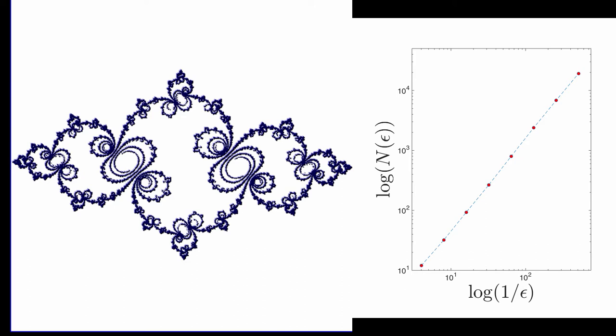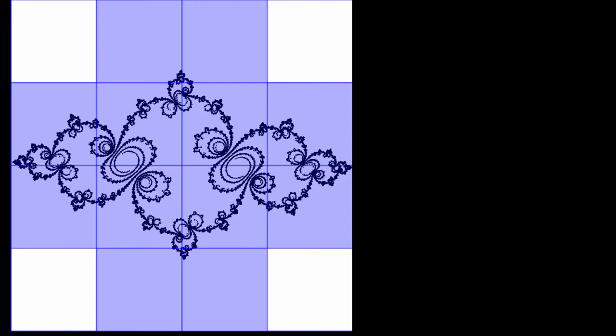The first step in this algorithm is to cover the object with boxes of size epsilon. Let's begin with an epsilon of 0.25. We then need to count the number of boxes that were needed to cover the object with this size epsilon. In this case, 12 boxes were needed to cover the Julia set using an epsilon of 0.25.